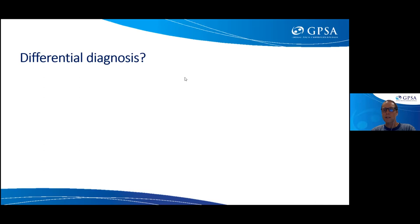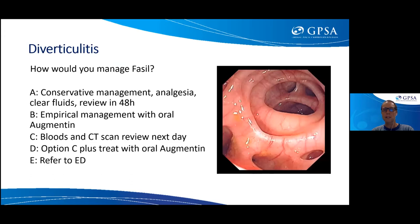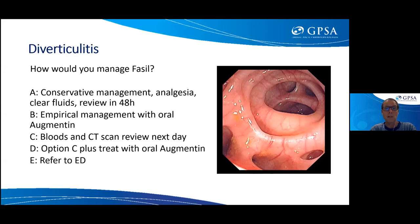Chat responses suggest: retrocecal appendicitis, renal colic, UTI, psoas abscess, ischemic colitis — a wide range of differentials. As supervisors, the first question to a registrar presenting this case wouldn't be how to manage acute diverticulitis, but what else might you be missing? Assuming common things occur commonly and we feel it's most likely acute diverticulitis — how do we manage this man? Options include conservative management with analgesia, fluids and review; empirical oral augmentin; CT scan and blood tests; or sending to ED.